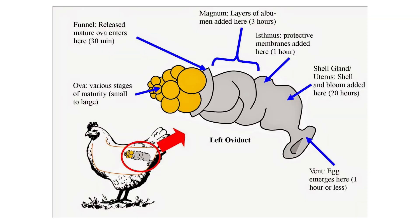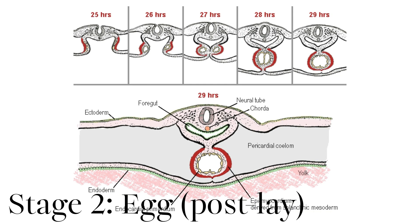Once cell division has commenced, the zygote is now called an embryo. After four hours in the uterus, the egg now contains 256 cells. The chick embryo initially forms one layer over the yolk, then develops into ectoderm, endoderm and mesoderm layers. Organs and tissues develop from these layers.